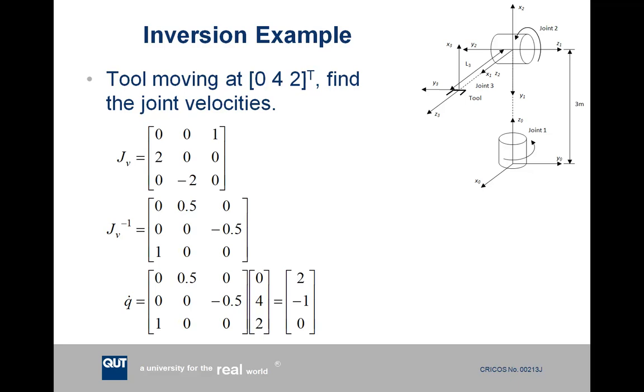So our equation for Q dot, our joint variables to achieve this tool velocity, is the inverse Jacobian times our tool point velocities. If you multiply all this out, you get back to our original joint variables of 2 rads per second for joint 1, negative 1 rads per second for joint 2, and 0 meters per second for joint 3. And remember, joint 3 was fixed, so that's fine.